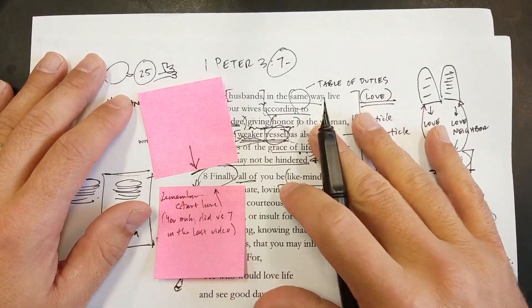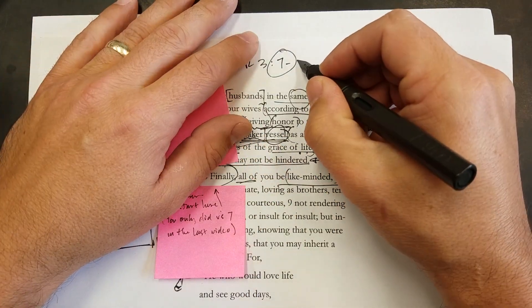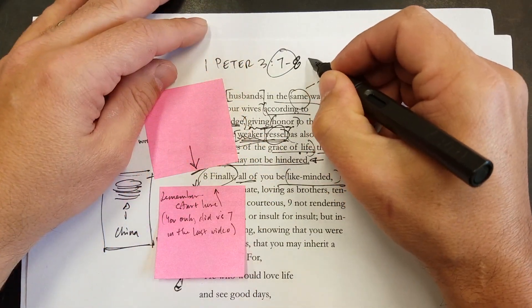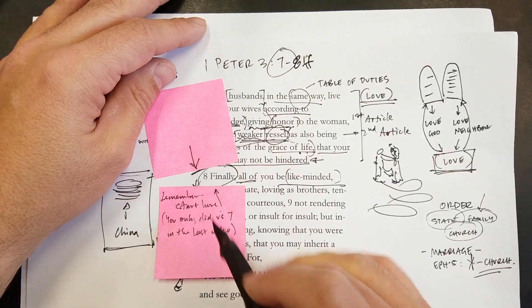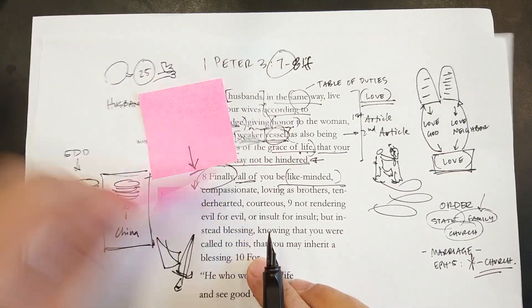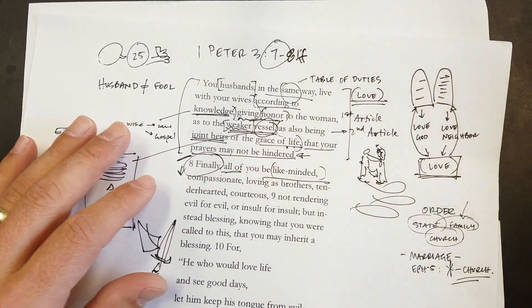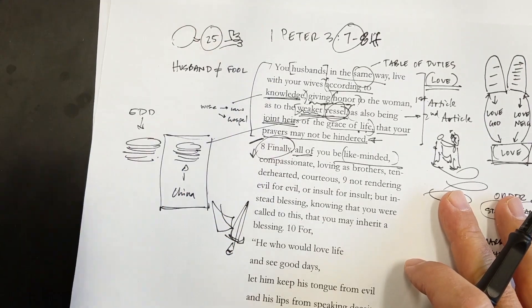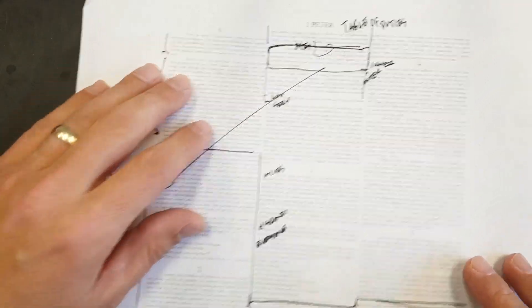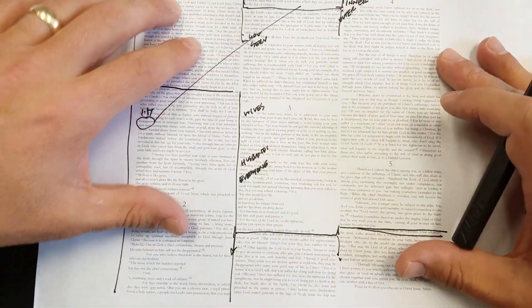Alright, grappling with the text. 1 Peter chapter 3, verse 8 and following. Apparently last week I did not want myself to forget that this is where we start. I had my two sticky notes. Anyway, now where are we in 1 Peter? We're in the table of duties and here's the whole book. Remember, you can't see it, but this is the structure.